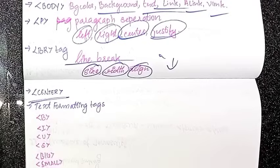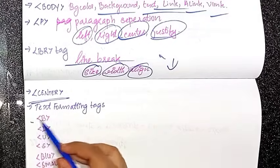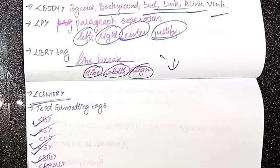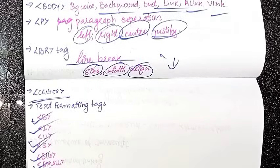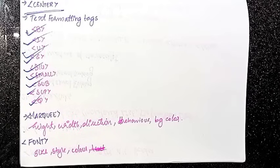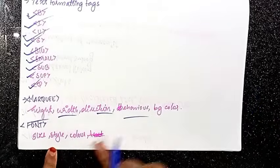Next is the center tag. Text formatting tags include: bold, italic, underline, strike, big, small, subscript, superscript, and quotation. Then the marquee tag with attributes: height, width, text, direction, and behavior. Font tag with attributes: size, style, and color.